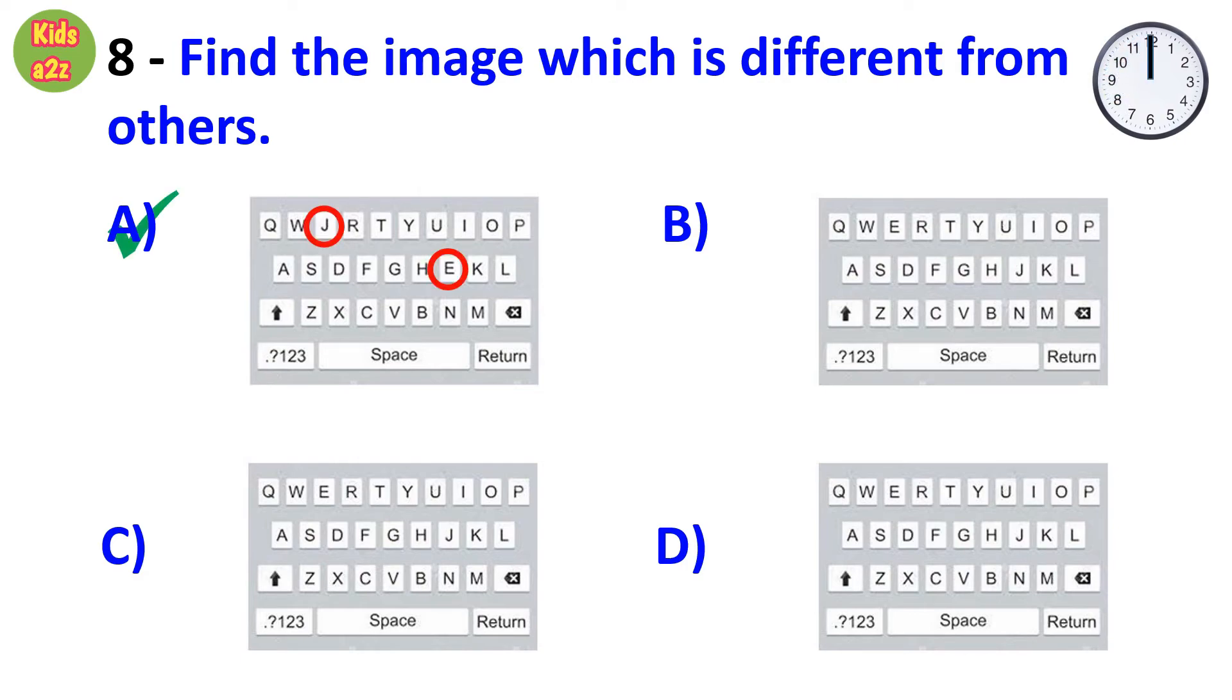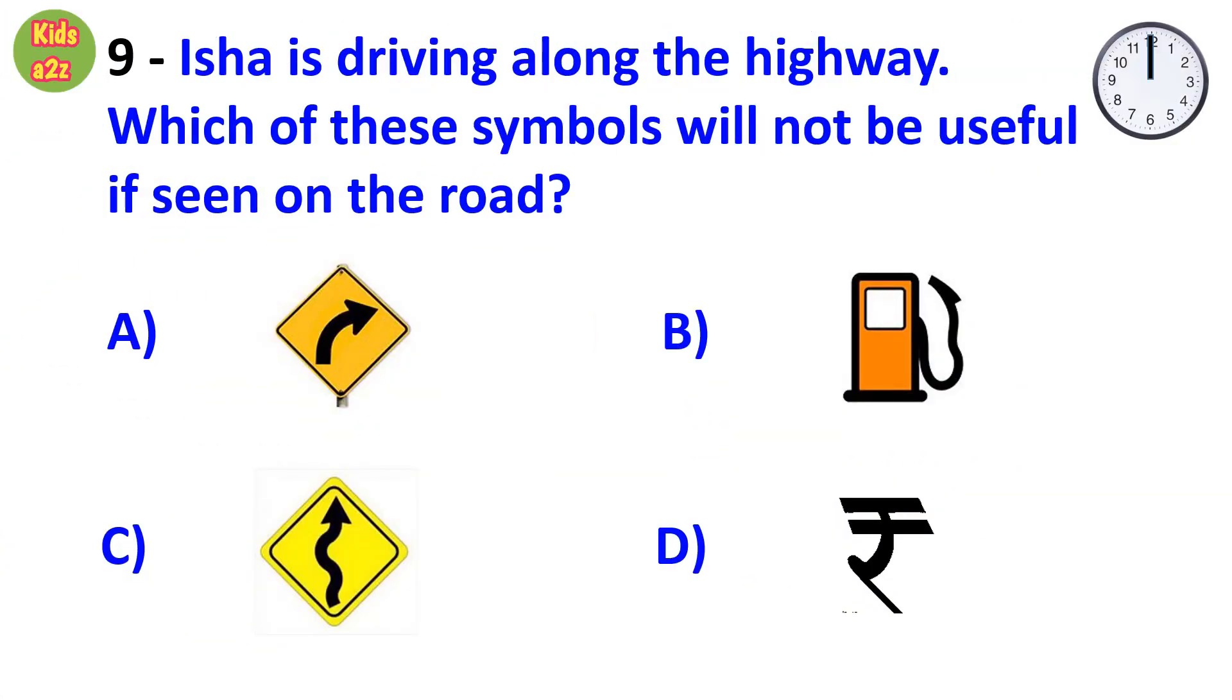Question number 8: Find the image which is different from others. Answer is option A, because position of letters E and J are interchanged in option A.